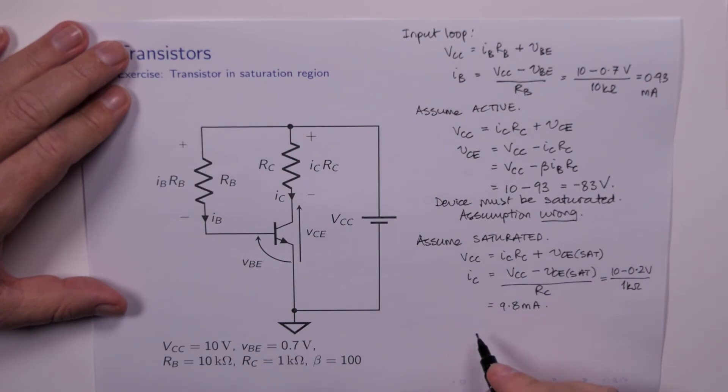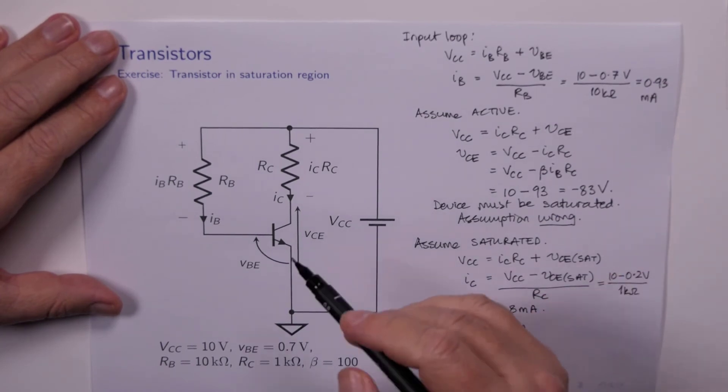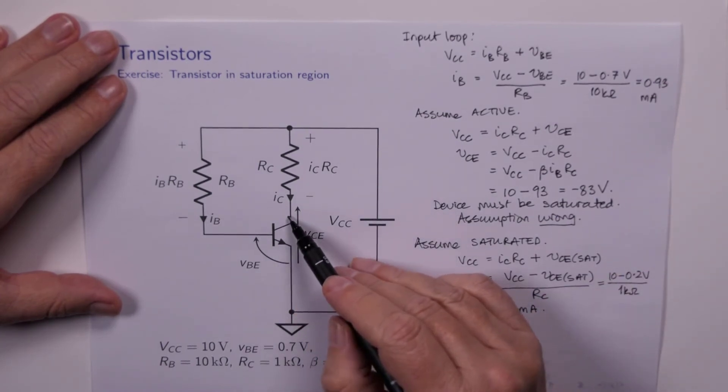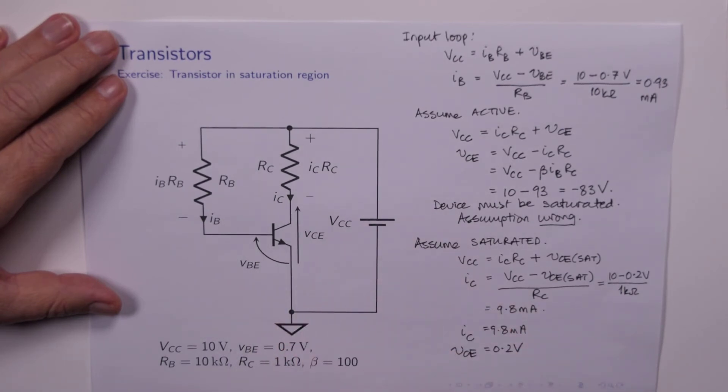So we can finish off by saying that IC is 9.8 milliamps, VCE is 0.2 of a volt. What else can we check? Well, let's see. VBC now is 0.5 of a volt, because that's 0.7, that's 0.2.